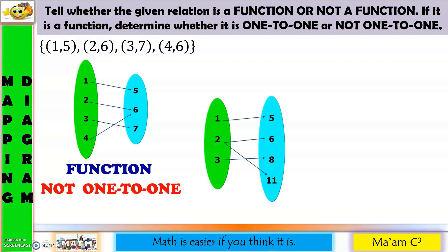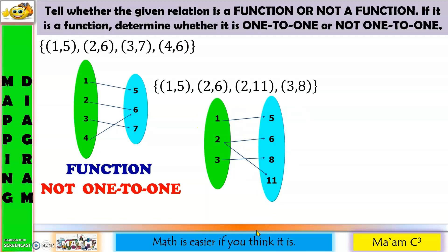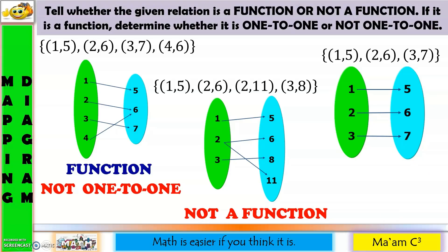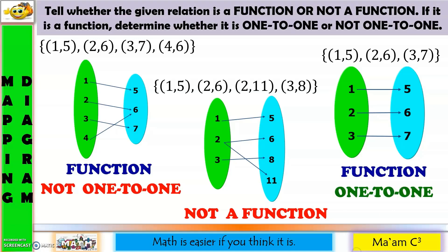Let us have another one. The equivalent set of ordered pairs is (1,5), (2,6), (2,11), and (3,8). Looking at the x values, 2 was repeated. Therefore, this is not a function. Another one. The equivalent set of ordered pairs is (1,5), (2,6), and (3,7). Since no x value has been repeated, therefore this is a function. And since there is no y value also that has been repeated, this is a one-to-one function.